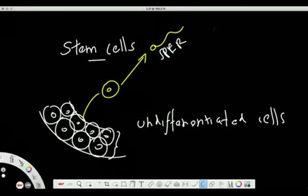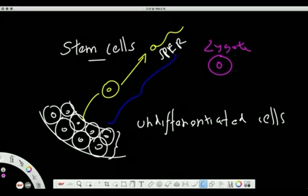The question is: what decides the differentiation of these cells into sperm cells? What makes these cells differentiate into specialized cells? The answer is that it is decided by the DNA. Now if you look at the same story for the fertilized egg cell — the zygote — it is dividing into two. Initially it is just dividing to make the same kind of cells, dividing and increasing cell number.